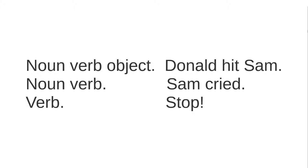With noun, verb, object: Donald is the subject, the noun; hit is the verb; and Sam is the object, the recipient of the action of the verb, in the case of a transitive verb. Or if it's just noun and verb: Sam cried. Or just a verb: stop is an imperative — it has the understood 'you.' These are some pretty basic structures that you're going to be seeing a lot.